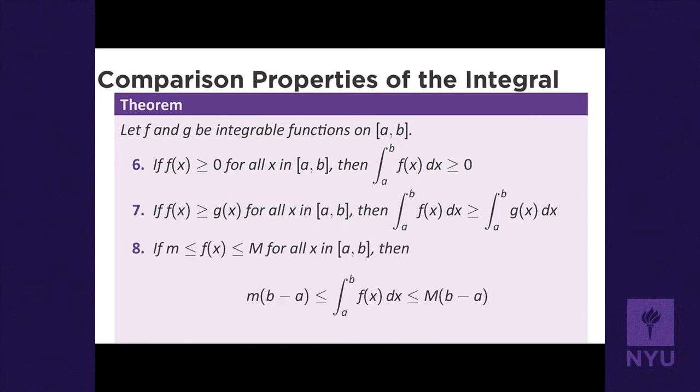The third comparison property: if m ≤ f(x) ≤ M, then m(b - a) ≤ ∫f(x)dx ≤ M(b - a). This follows directly from property seven: if f(x) ≤ M, then ∫f(x)dx ≤ ∫M dx = M(b - a).